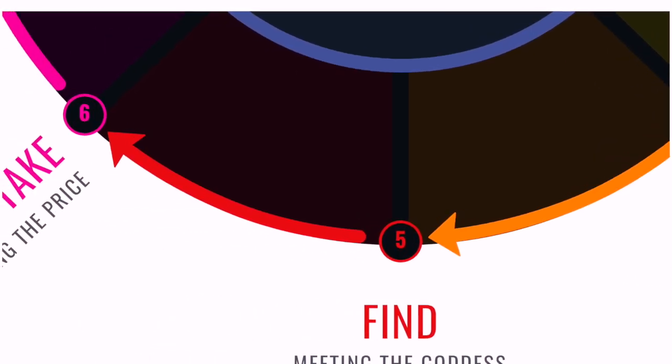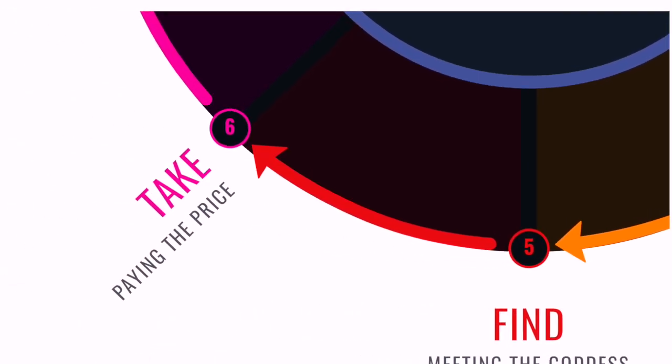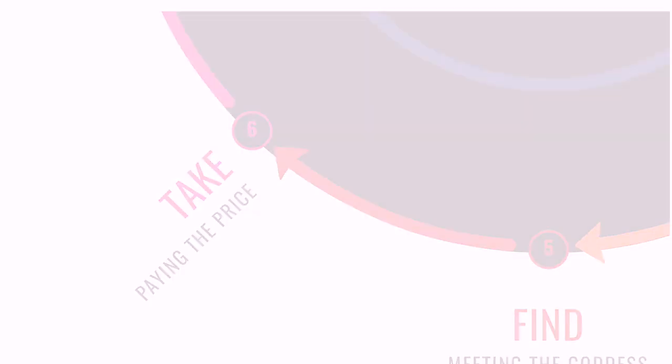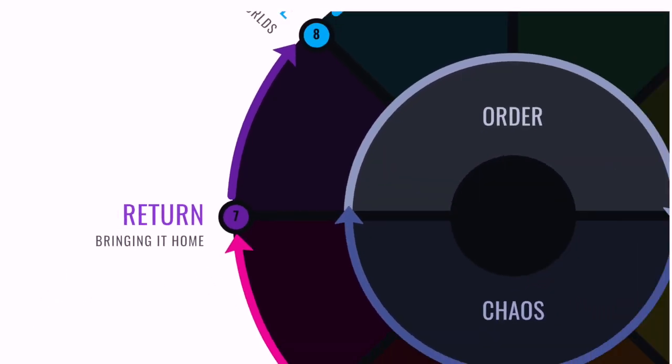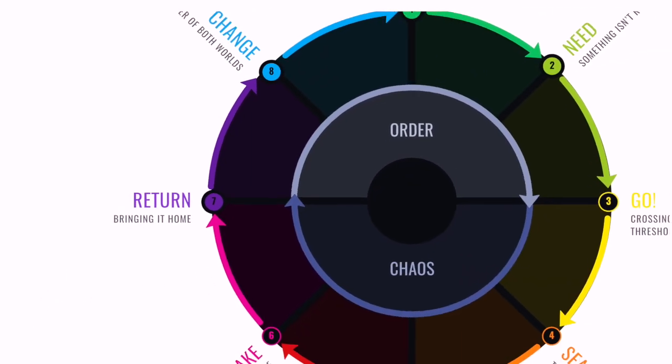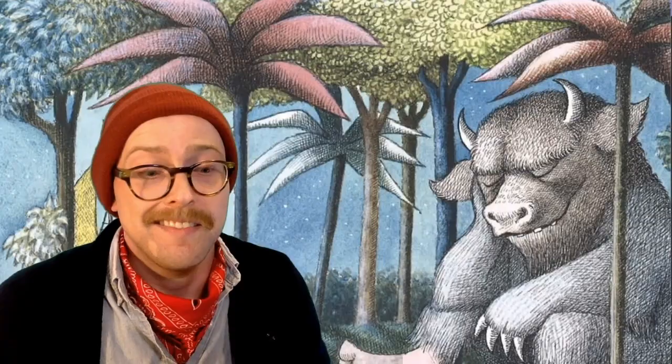They find what they were looking for, but they pay a price for it. So you return back to that place you were in part one, but you've changed. This is only a 300-and-some word story — it's 10 sentences long, 37 pages. It's short, but despite that, we still can get that entire story circle.